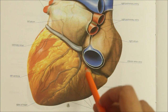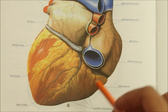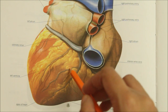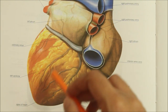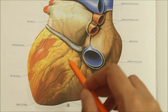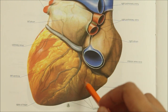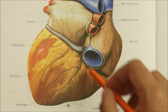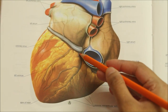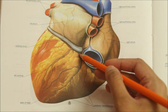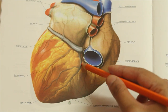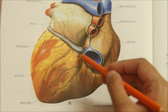The inferior or diaphragmatic surface rests on the central tendon of the diaphragm. The left two-thirds is formed by the left ventricle and the right one-third is formed by the right ventricle. The crux of the heart is a meeting point of the interatrial sulcus, the posterior interventricular sulcus, and the coronary sulcus.